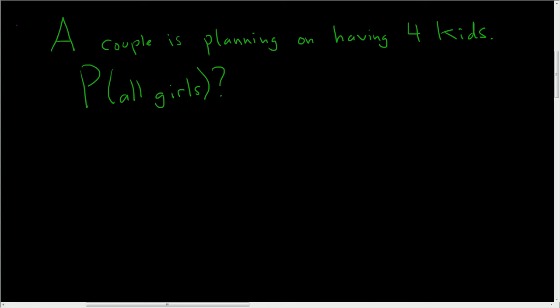So we have a couple, and they're planning on having four kids. What is the probability that every single kid ends up being a girl? Solution: this is pretty easy to work out. We want the probability that every single kid that's born is born a girl.